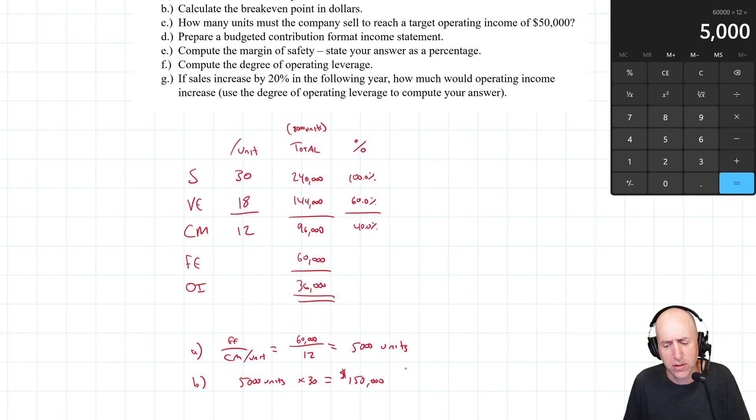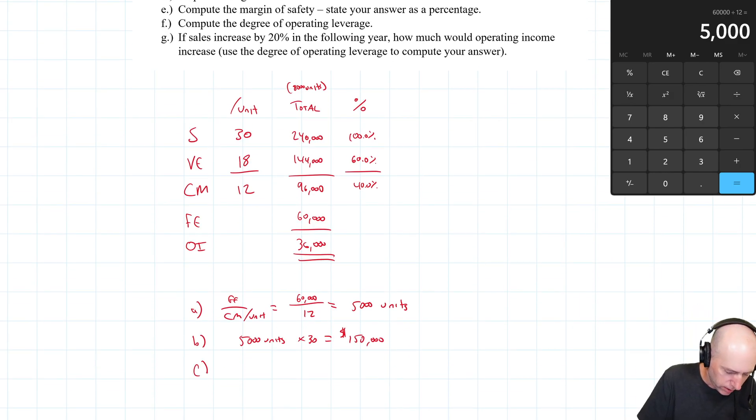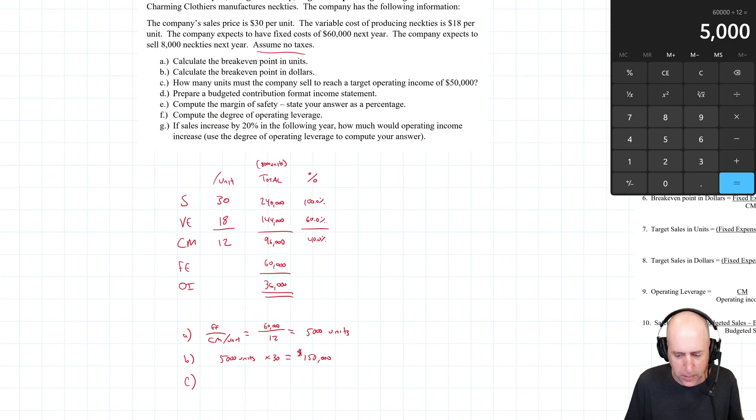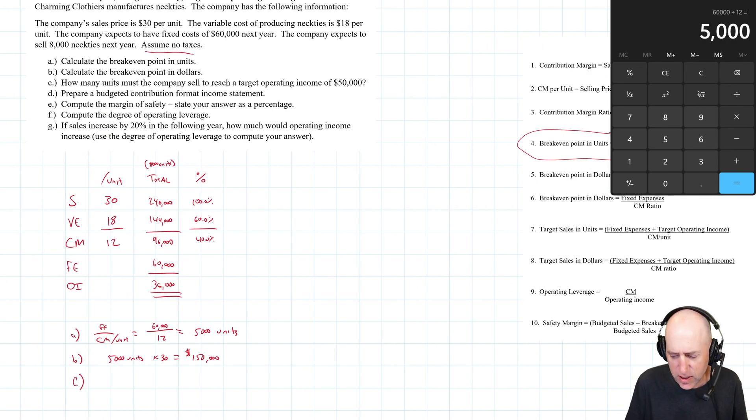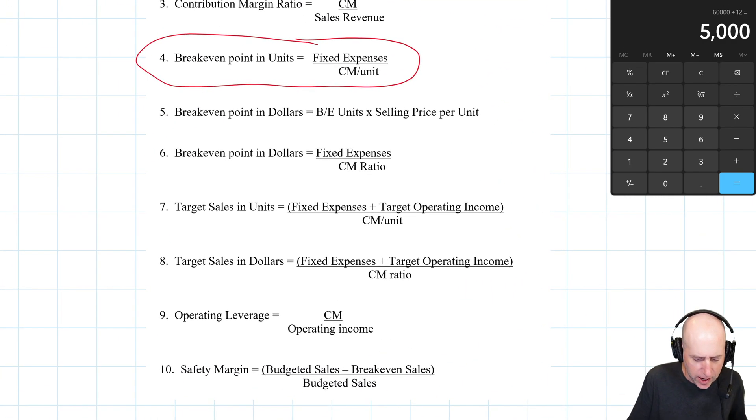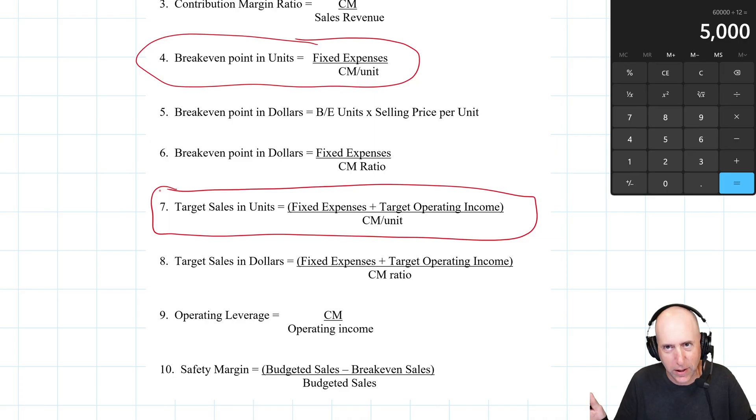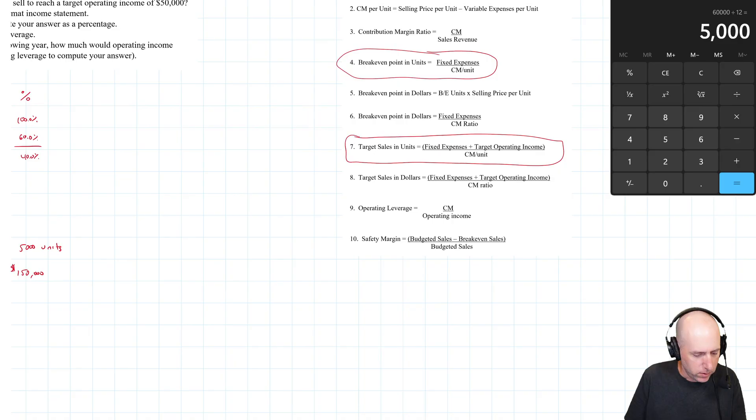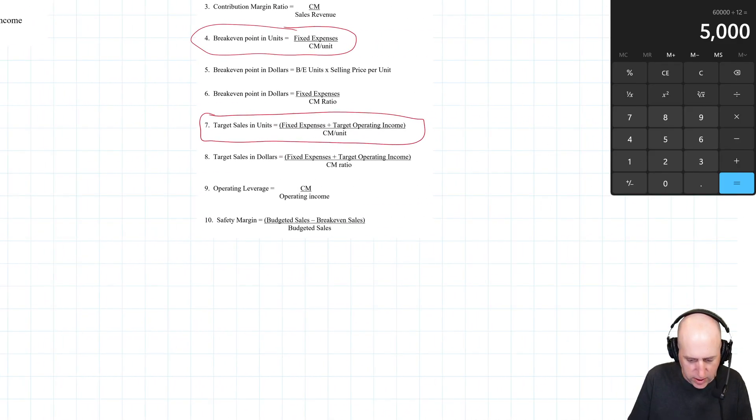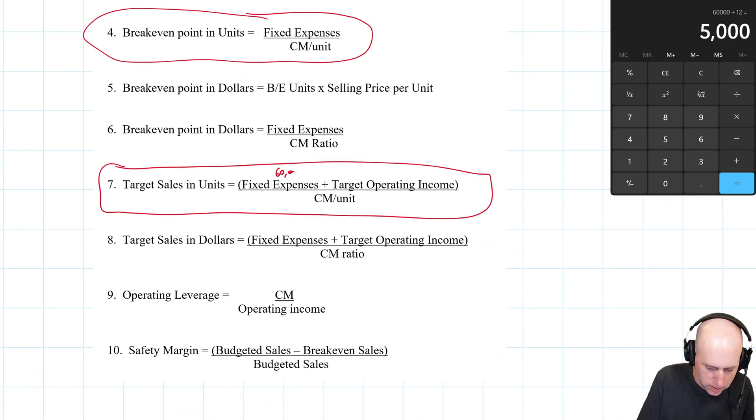Part C, how many units must the company sell to reach a target operating income of $50,000? So our target operating income is $50,000. And we're looking at Formula 7 now. If you're looking for where these formulas are, they're just in my workbook, TonyBell.com, and it's just at the start of the chapter. You'll see this formula list, fixed expenses plus target operating income divided by CM per unit. My fixed expenses were $60,000.